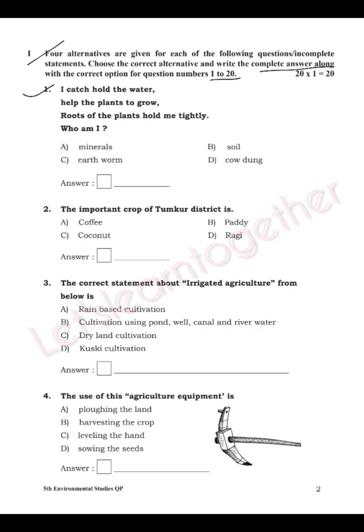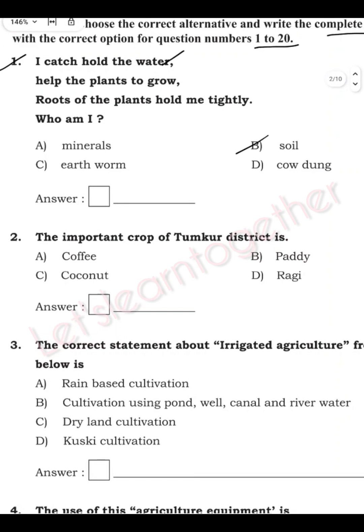Question 1: I catch and hold water, help the plants to grow, and roots of the plants hold me tightly — who am I? The options are minerals, soil, earthworm, or cow dung. The correct answer is soil, option B. Write 'B. Soil' as your answer.